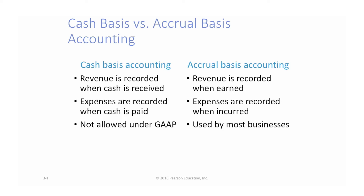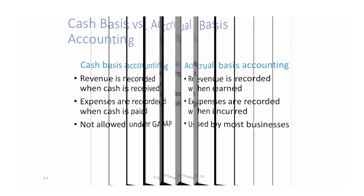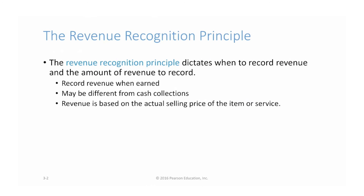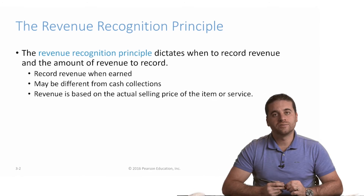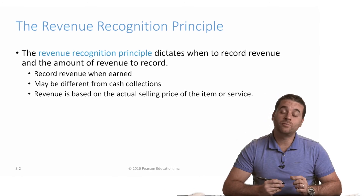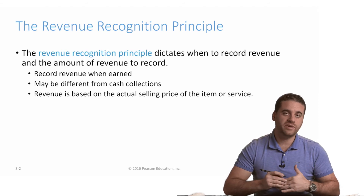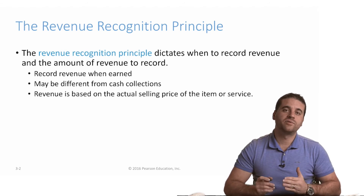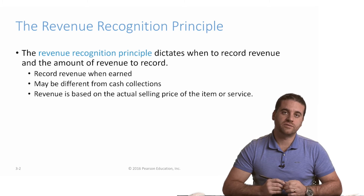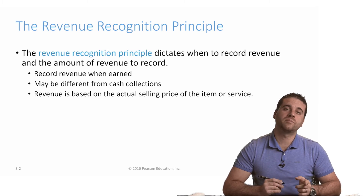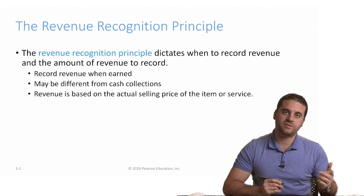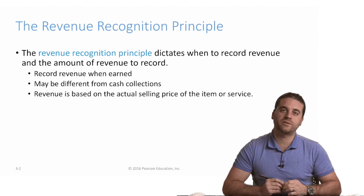There are two main principles in accrual accounting. The first one is the revenue recognition principle, which means that revenue is normally recognized when it's earned, not when we get paid for it. So if I provide a service today and I finish it, I have to record the journal entry to increase the revenue, even if the customer will pay me in the future. I do not wait to get the cash before I record the revenue.